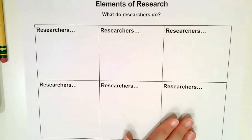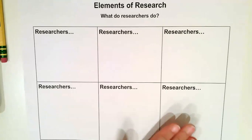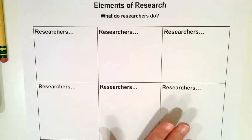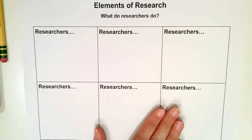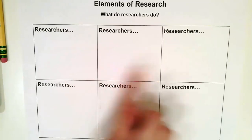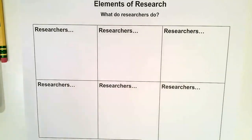You'll need this handout — this is the first handout you're going to need for today. It's called 'Elements of Research: What Do Researchers Do?' And we have six things we're going to talk about regarding what researchers do.